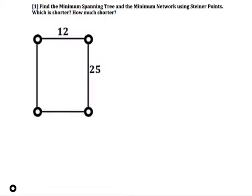In this problem we are going to work with this network. This network has 1, 2, 3, 4 vertices and 4 edges. We see that it's a rectangle, so we can assume that the opposite sides are going to be equal.